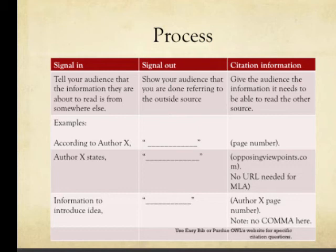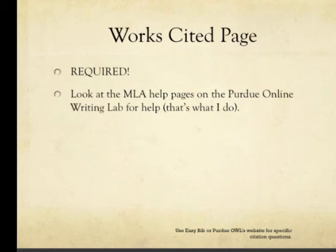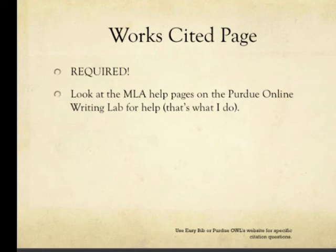The Works Cited page is required. You must list every single source on that page and use them in the correct format. If you used Opposing Viewpoints or something like that, the documentation is actually listed at the end of the article — you need to copy and paste that into your paper. When I'm unsure about a particular source type, like an anthology or a newspaper article, I just go to an MLA help page like the Purdue Online Writing Lab.